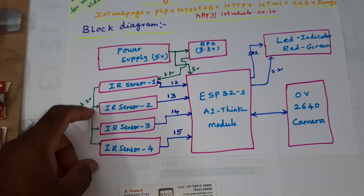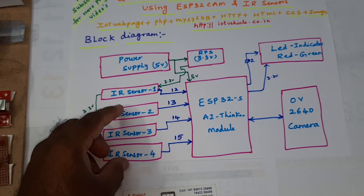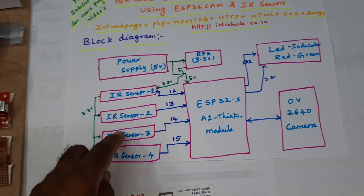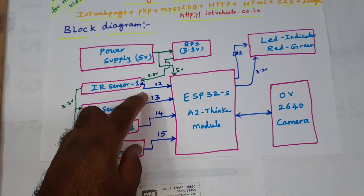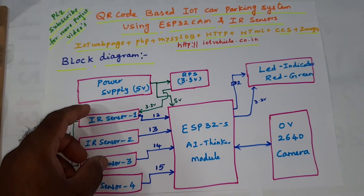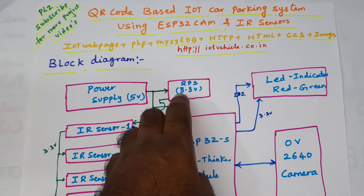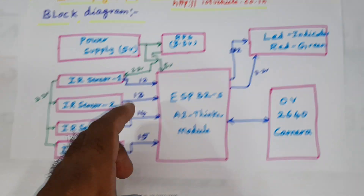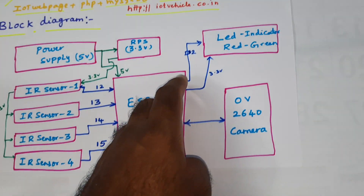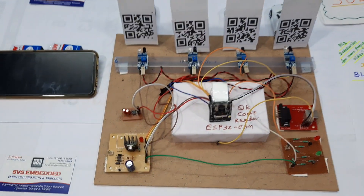We are using four IR sensors — these are obstacle sensors to detect the cars. IR sensor 1, sensor 2, sensor 3, sensor 4 are connected with digital GPIO pins 12, 13, 14, 15 and a 5V power supply module, and 3.3V power supply for the IR sensors, red LED, and green LED connected to the D2 pin.